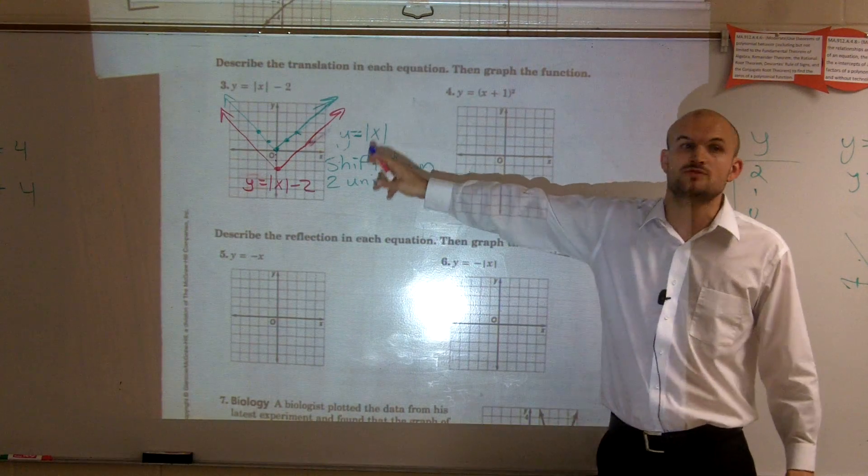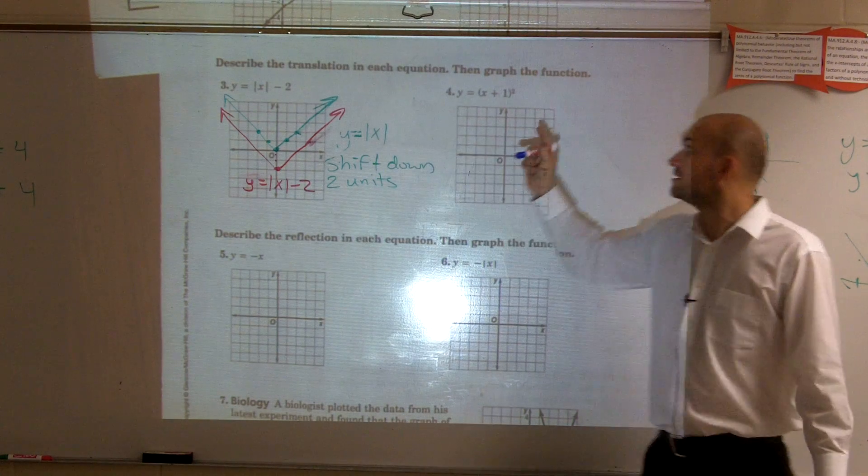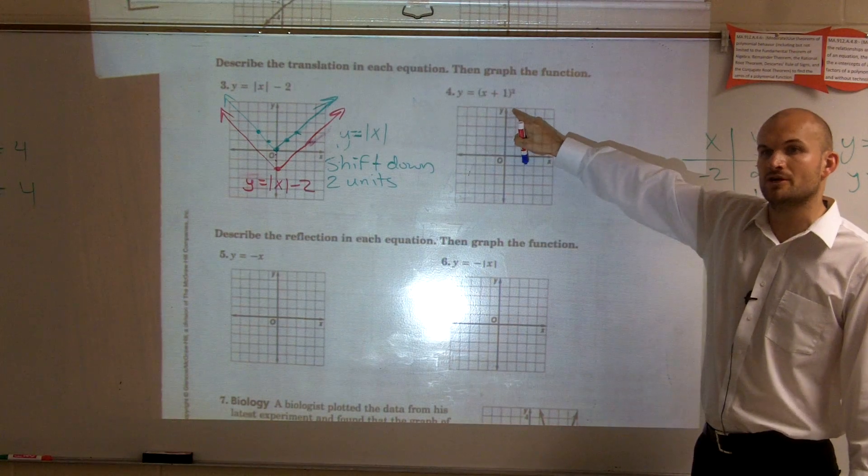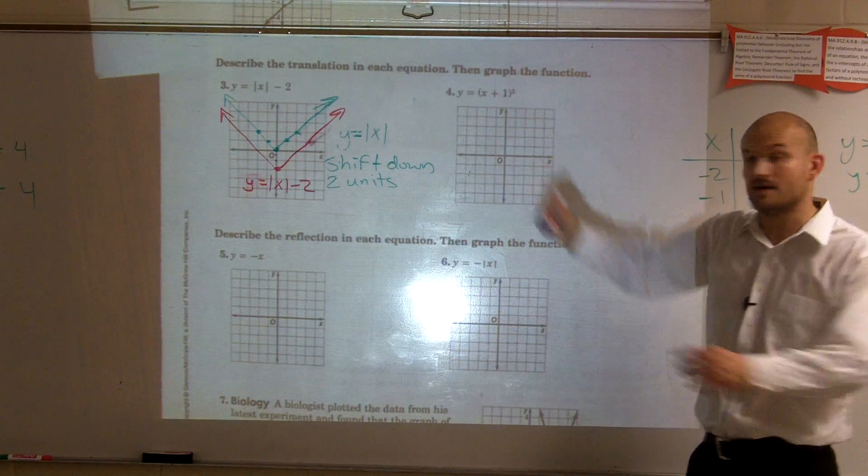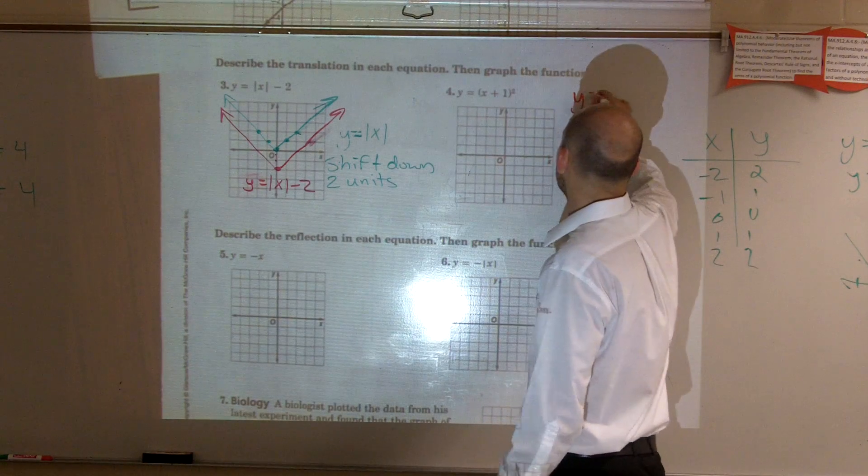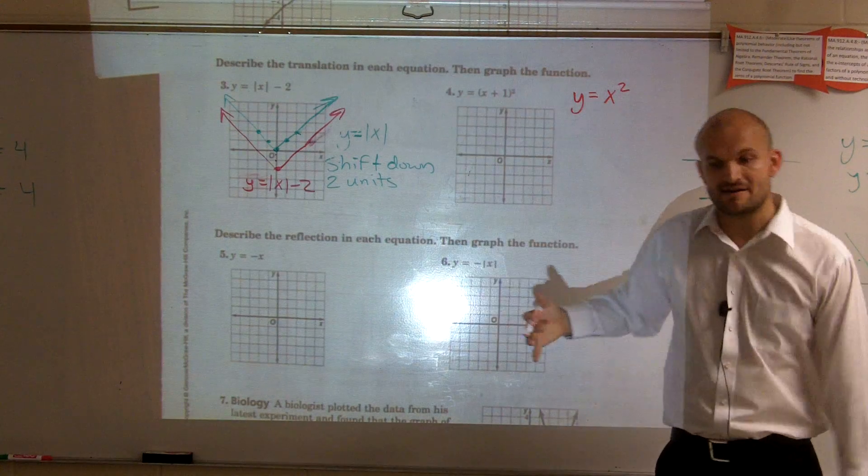So for this one, the parent graph was y equals absolute value of x. For number four, what is going to be our parent graph? x squared, right? Very good. So we write y equals x squared. So that's our parent graph.